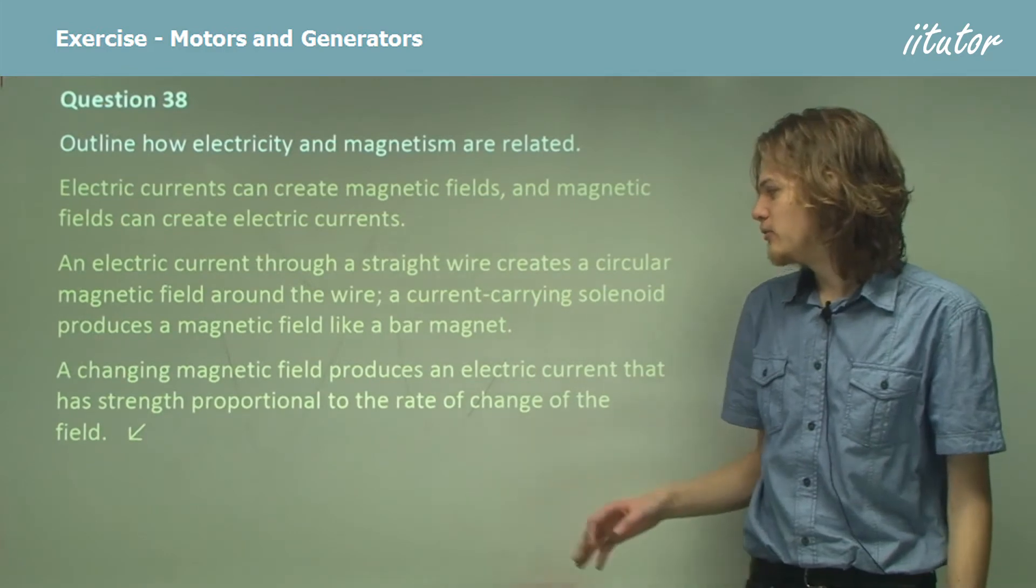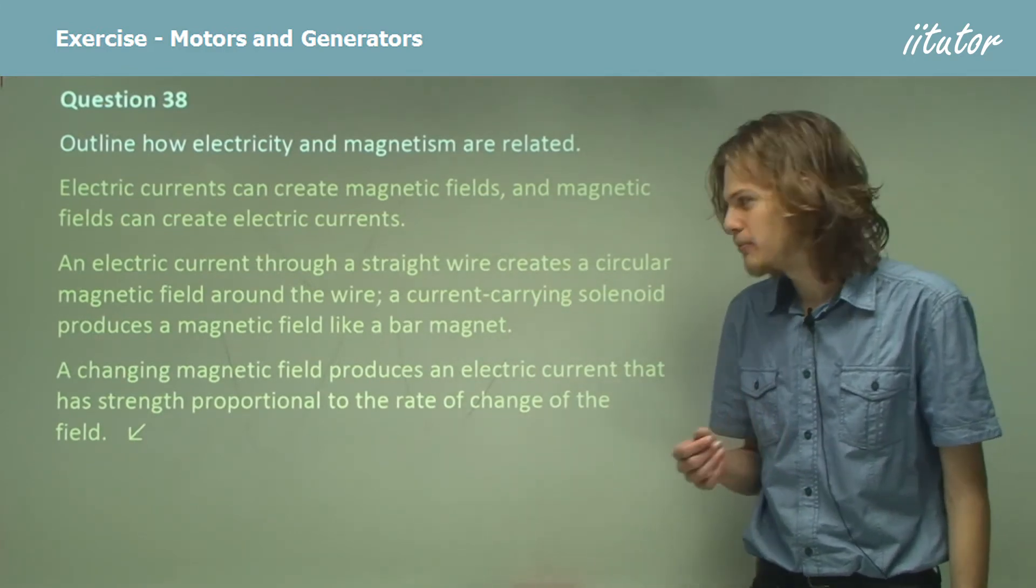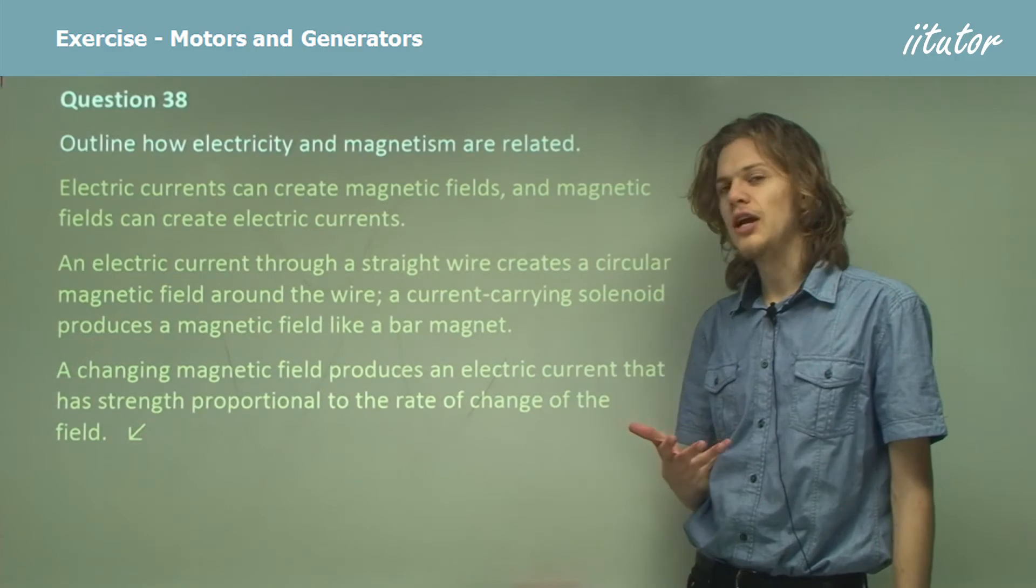A changing magnetic field can produce an electric current that will have strength proportional to the rate of change of the field.